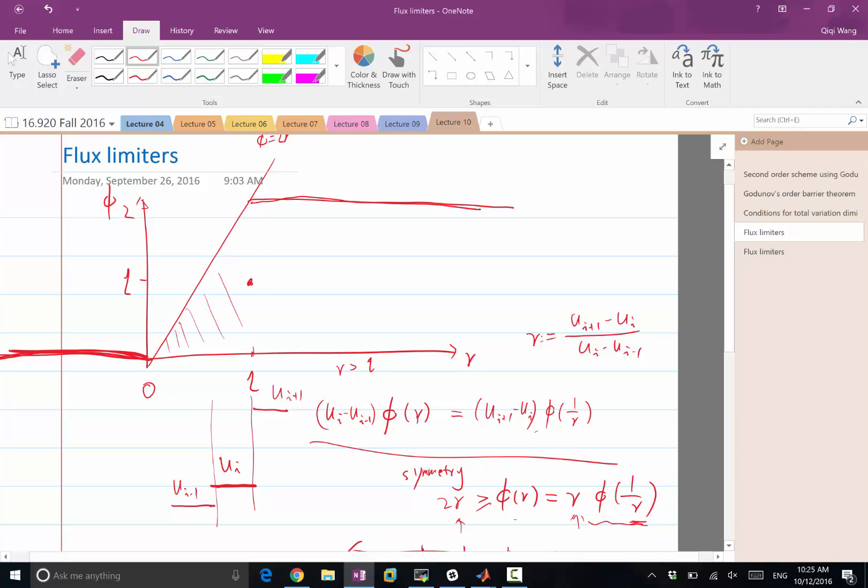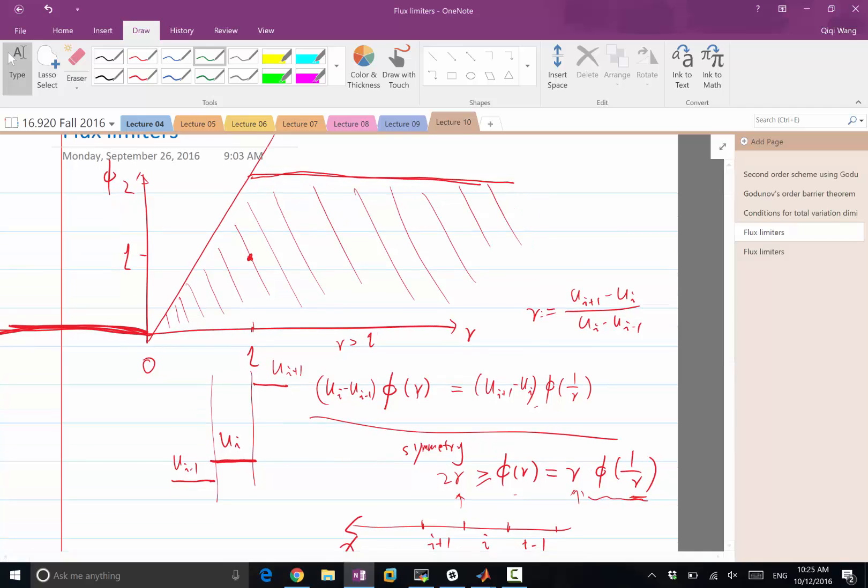So this is the region where we are going to get monotonic schemes. All right, but here's the question. If I keep φ equal to 0 all the way, is that good? It satisfies both φ of r less than 2r and φ less than 2. What requirement does φ always equal to 0 not satisfy? It also satisfies the criterion that φ is equal to 0 when r is less than 0. Yeah, it doesn't satisfy that φ has to be equal to 1 when r is equal to 1. And that is for second-order accuracy, right?